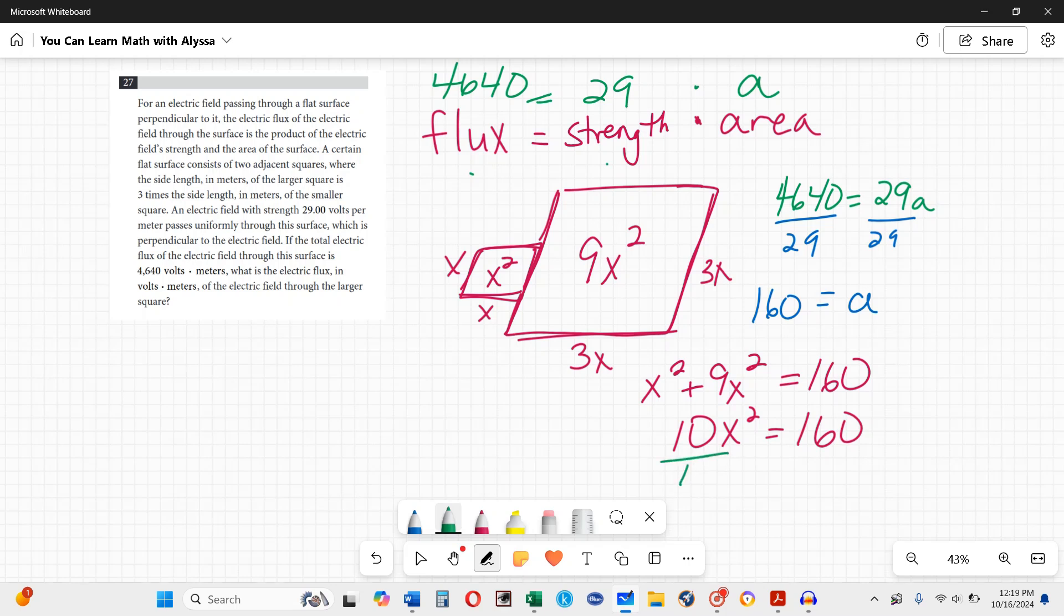Since x squared is being multiplied by 10, I need to divide both sides by 10 and I get that x squared equals 16. Then to undo that squared, I can take the square root of both sides and x equals 4. Square roots can be positive or negative, but here we're talking about a length so it's only positive.